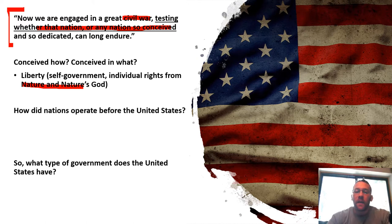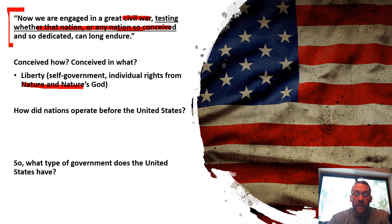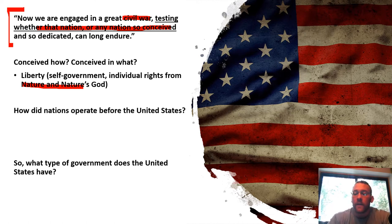Lincoln's speech says: 87 years ago we were conceived in liberty, and the whole world in 1776 said you are out of your mind, you cannot do this, this is not going to last. Now we're in a civil war and the whole world is looking at the United States saying, 'We told you so — you need hierarchies, you need monarchs, you need a few people in charge directing everybody around. You cannot have self-government. Self-government is a fairy tale.'